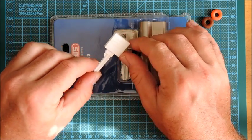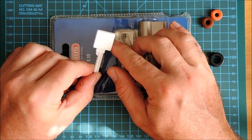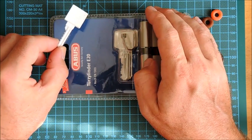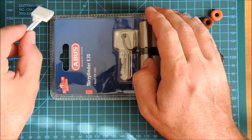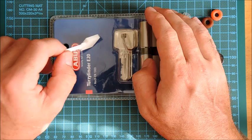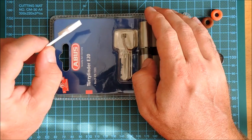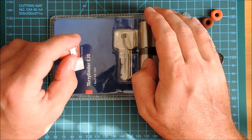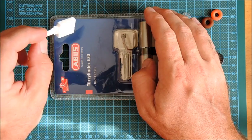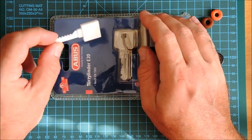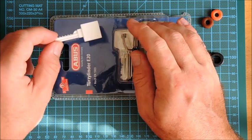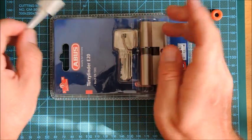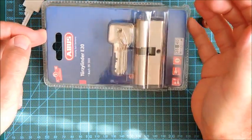This is the pretty bump key for the Abus E20 and E30 series, which is replacing the Abus C83 series eventually. At the moment they're sold in tandem, but eventually the E20 and E30 will take over. It's a 6-pin cylinder.